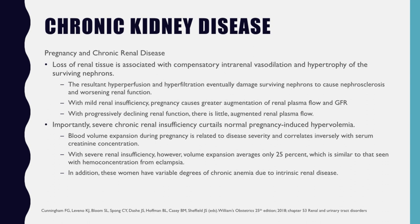Loss of renal tissue is associated with compensatory intrarenal vasodilation and hypertrophy of surviving nephrons, and the resultant hyperperfusion and hyperfiltration eventually damage surviving nephrons causing nephrosclerosis and worsening renal function. With mild renal insufficiency, pregnancy causes greater augmentation of renal plasma flow and GFR; with progressively declining renal function, there is little augmented renal plasma flow. Severe chronic renal insufficiency curtails normal pregnancy-induced hypervolemia — blood volume expansion averages only 25%, similar to that seen with hemoconcentration from eclampsia. These women also have variable degrees of chronic anemia due to intrinsic renal disease.